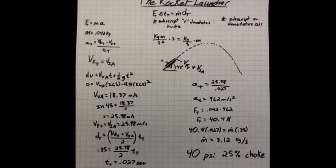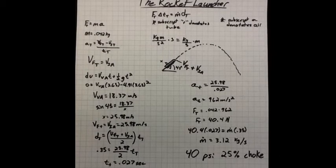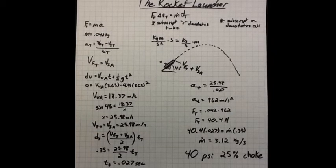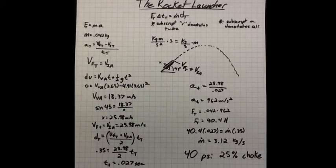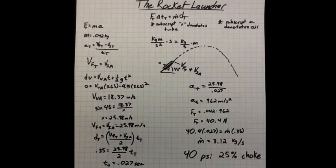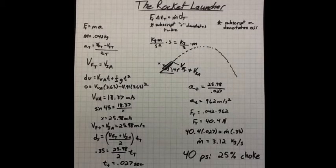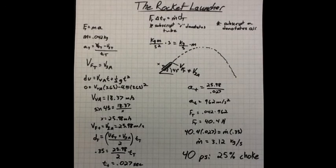By using the same process, we were able to find that when the flow was constricted by 25%, MDOT equaled 3.12 kg/s. In addition to increases in the value for MDOT, we saw large increases in the magnitude of the acceleration, velocity, distance, and time the rocket was in the air. We saw a large decrease in the time the rocket remained on the tube as well.